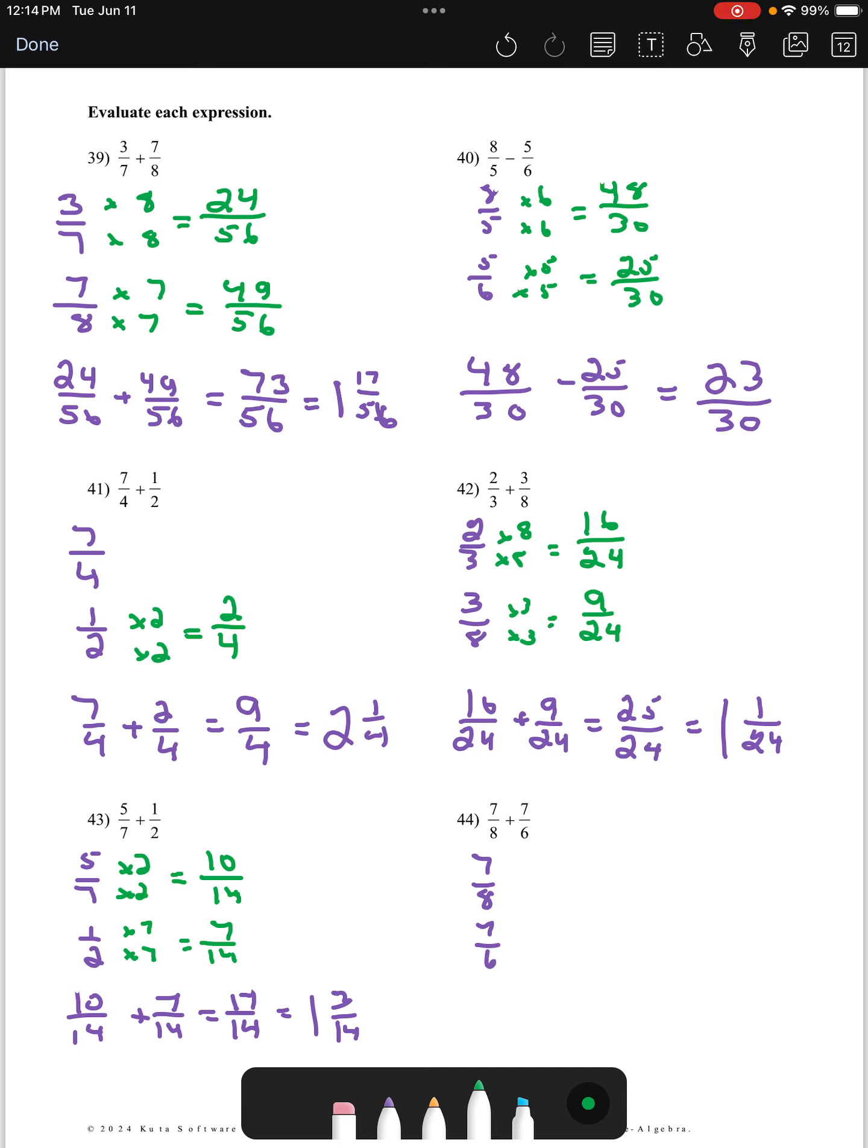Finally, we have 7/8 and 7/6. 8 and 6 can agree on becoming 24. You'll notice, by far and large, the rest of the problems today, we were just multiplying each fraction by the other fraction's denominator. That is oftentimes the case, but it doesn't have to be. Sometimes the numbers can agree to become something smaller.